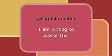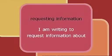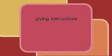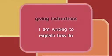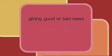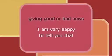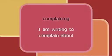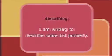Let's consider some examples. If your letter is for giving information, you might start with: 'I am writing to advise that.' For requesting information: 'I am writing to request information about.' For giving instructions: 'I am writing to explain how to.' Relating an event: 'I am writing to describe the accident I saw.' For giving good or bad news: 'I am very happy to tell you that.' Complaining: 'I am writing to complain about.' Describing: 'I am writing to describe some lost property.'